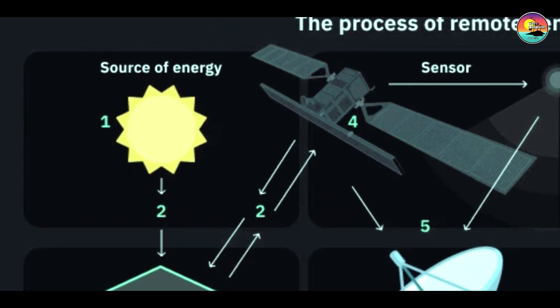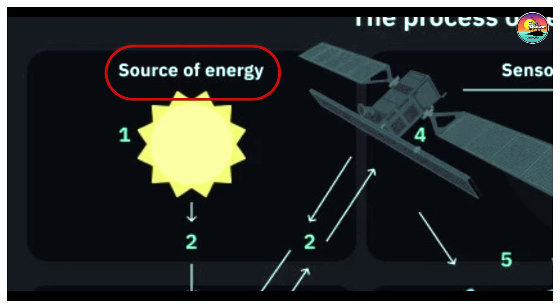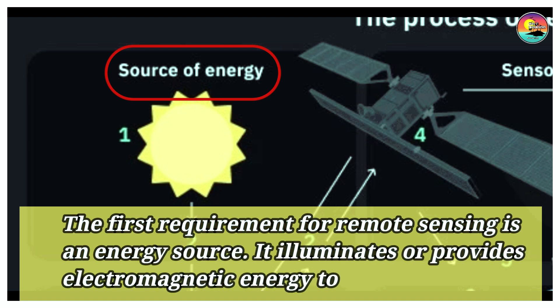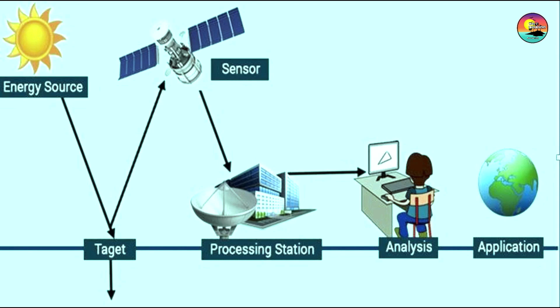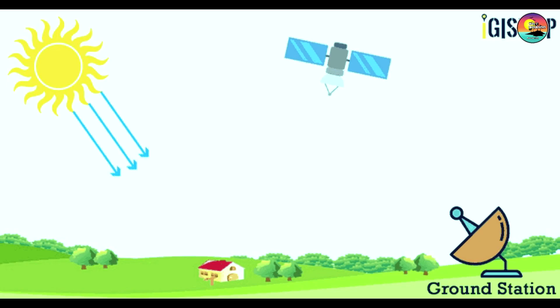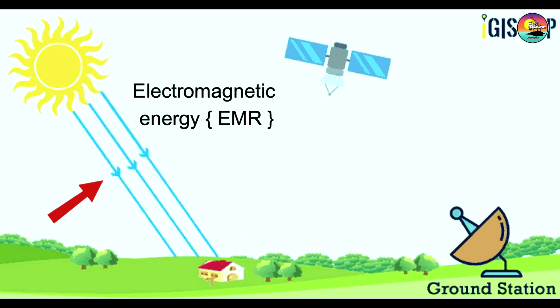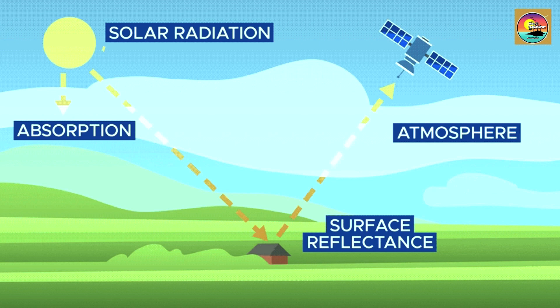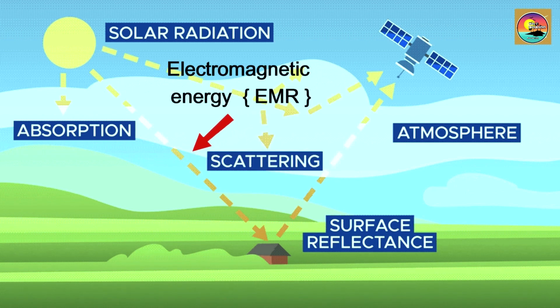The first component is energy source or illumination. The energy source illuminates or provides electromagnetic energy to the target, and then there is interaction with the target.